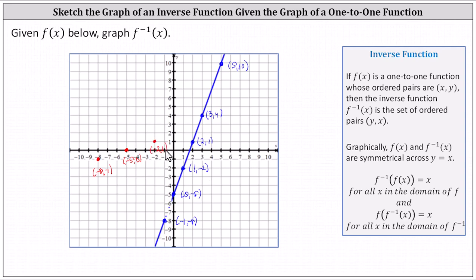If the point two comma one is a point on the graph of f of x, then the point one comma two is a point on the graph of the inverse function. If the point three comma four is a point on the graph of f of x, then the point four comma three is a point on the graph of the inverse function. And finally, if the point five comma ten is a point on the graph of f of x, then the point ten comma five is a point on the graph of the inverse function.